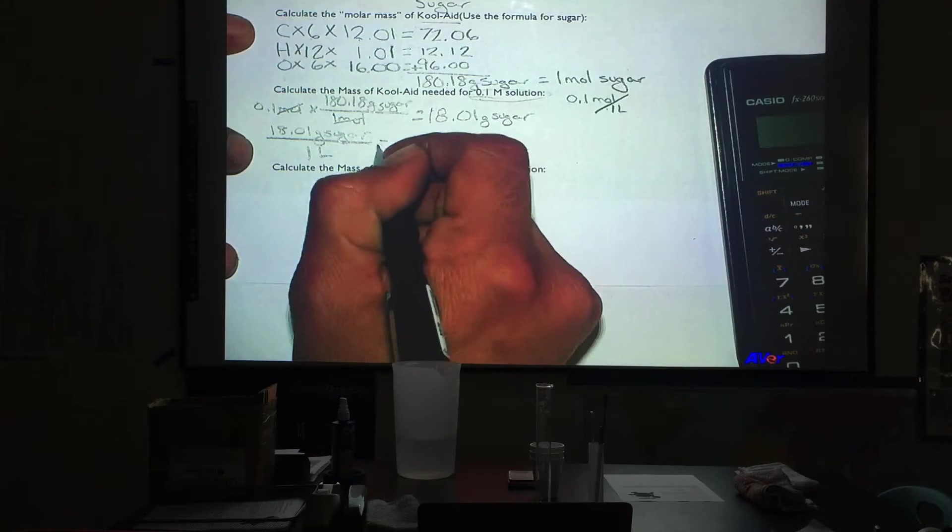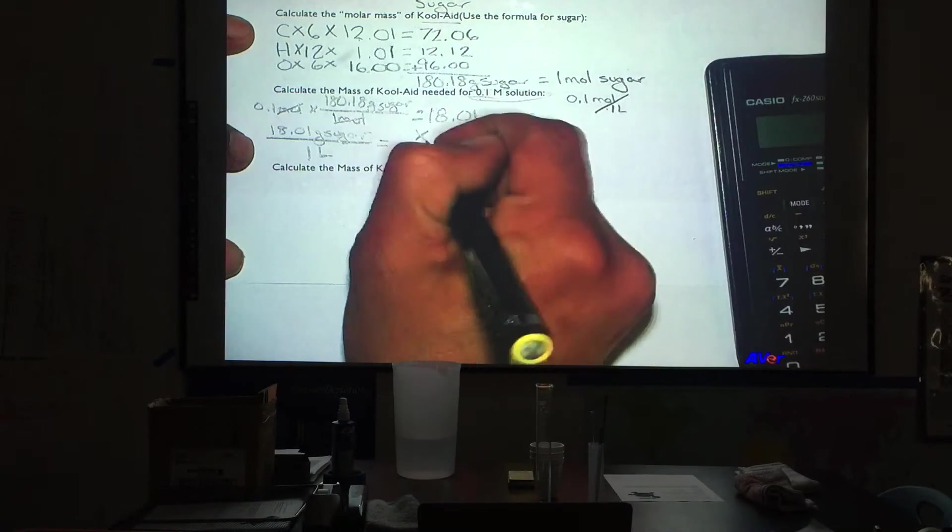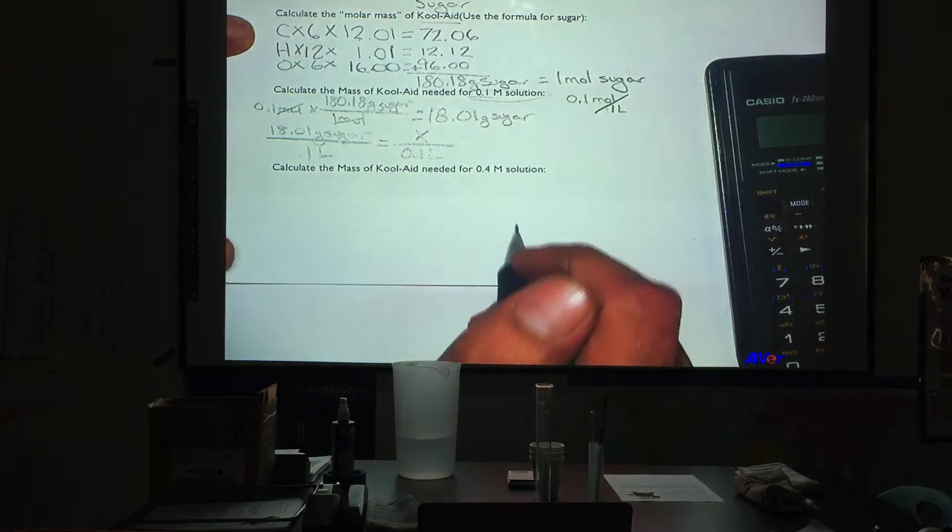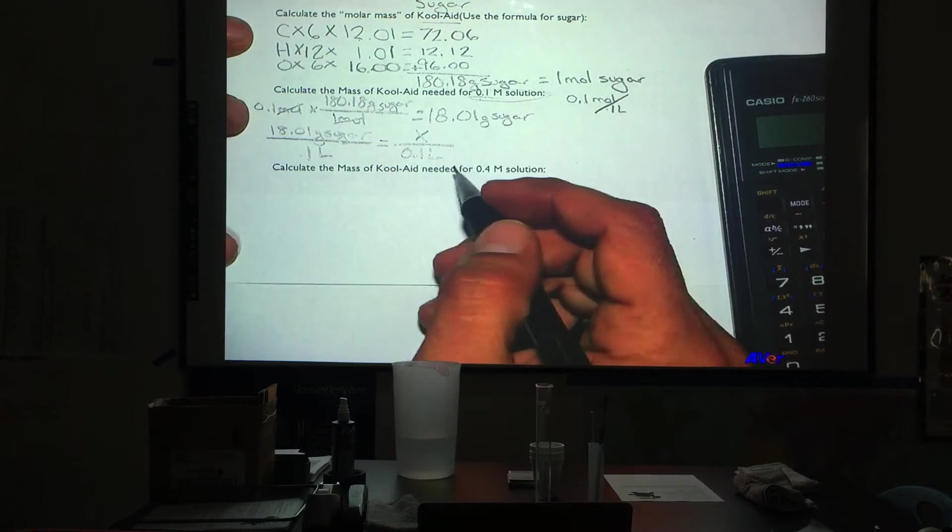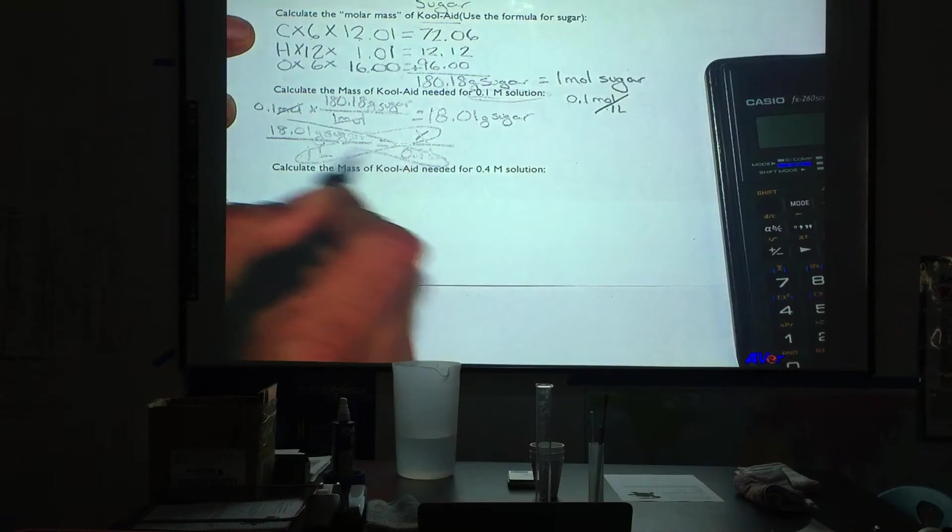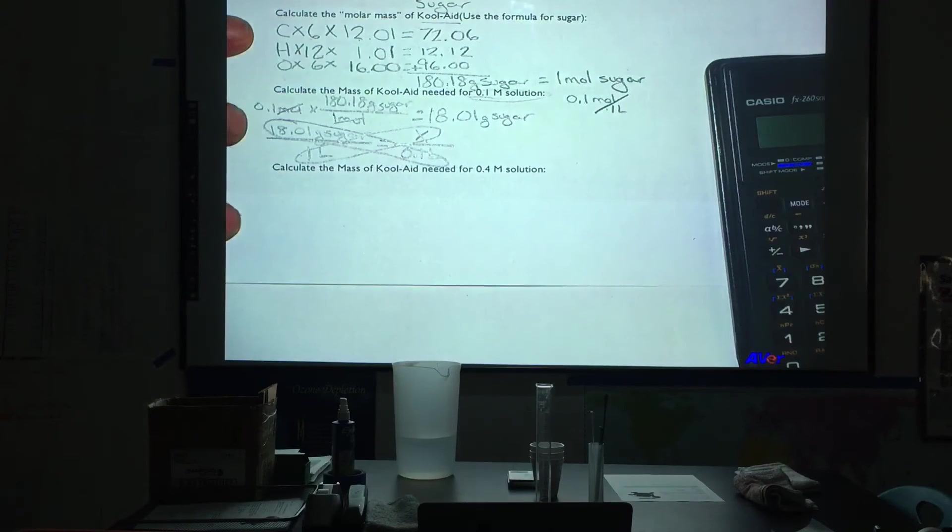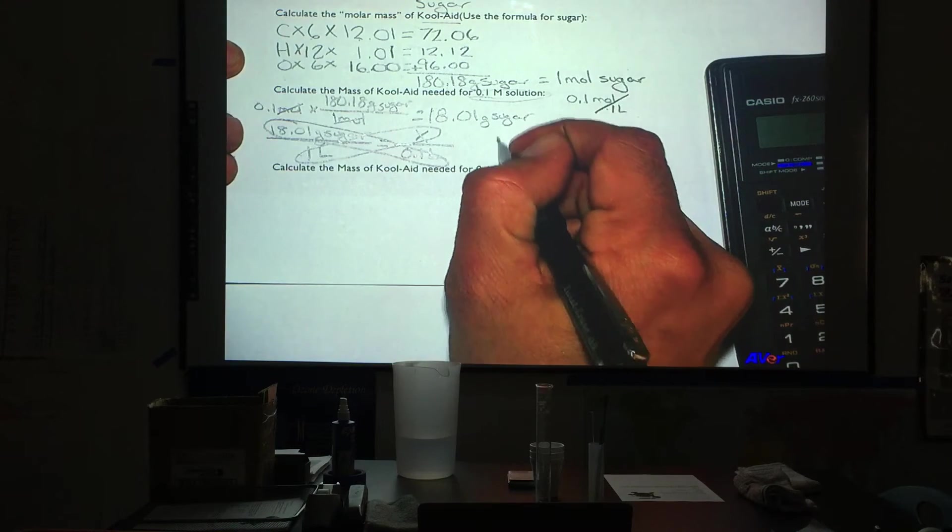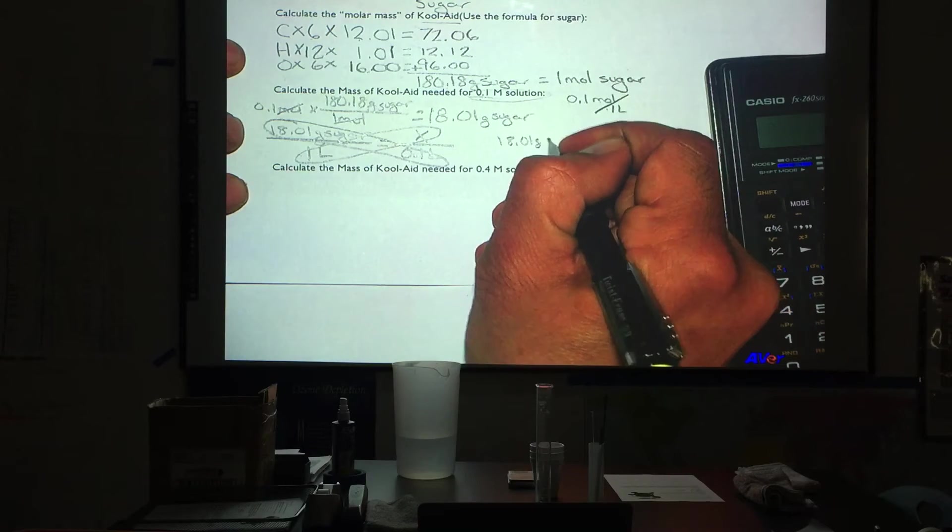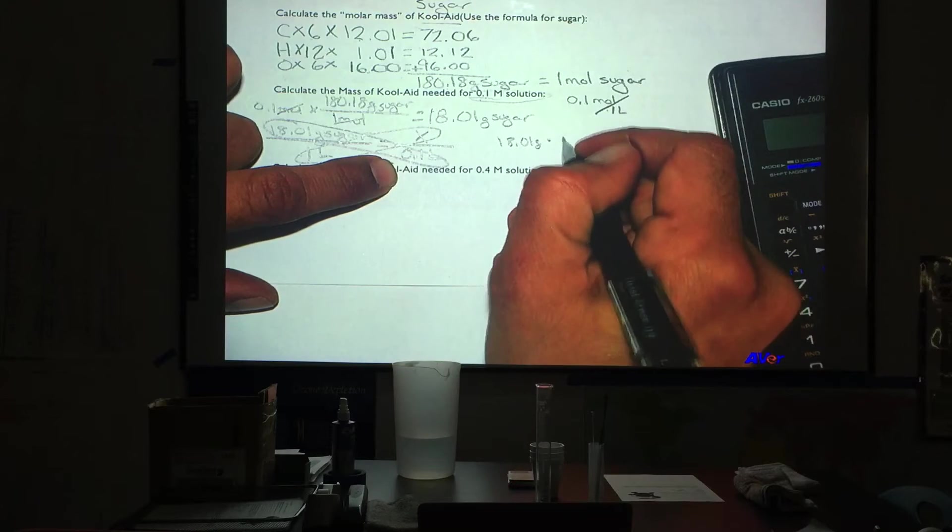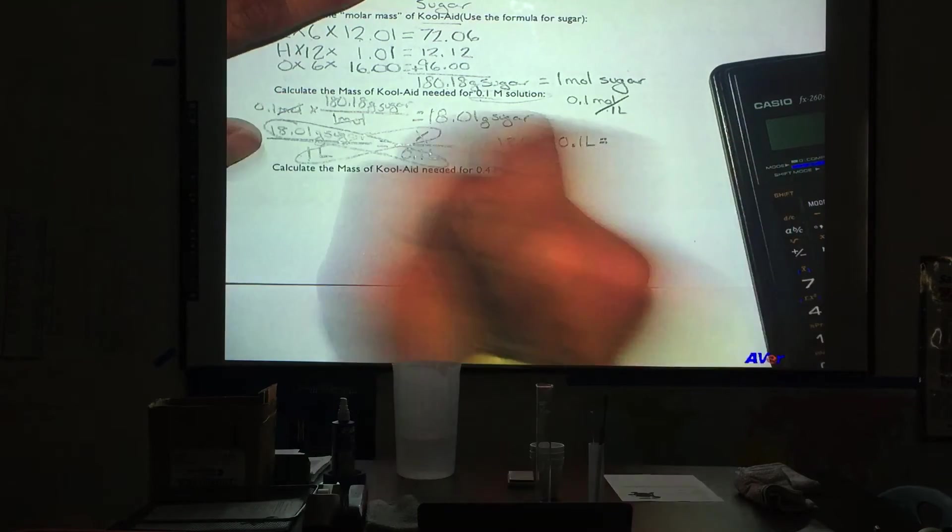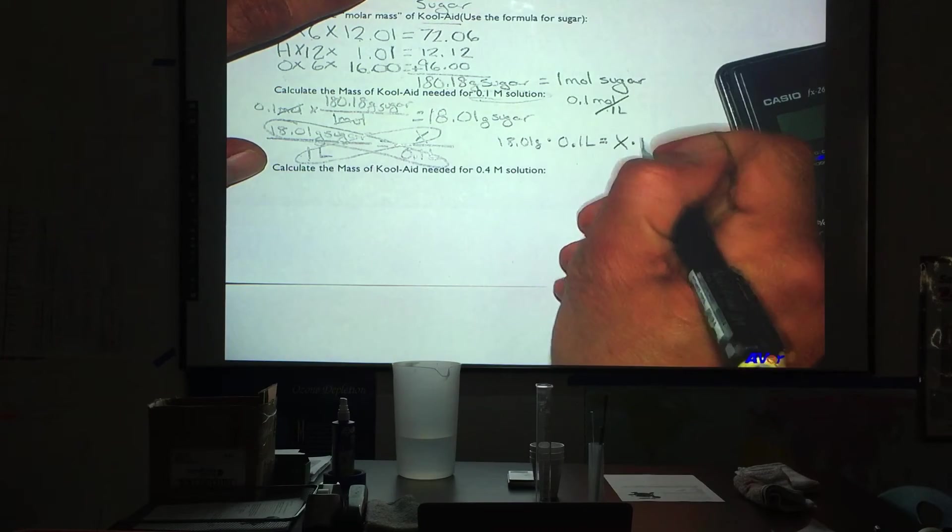We are going to say this is equal to x over 0.1 liters. Now with the cross multiplication you have done in the past, we are going to connect these two terms and these two terms. And we will go ahead and rewrite this equation as a proportion of 18.01 grams. We are going to multiply this by 0.1 liters.